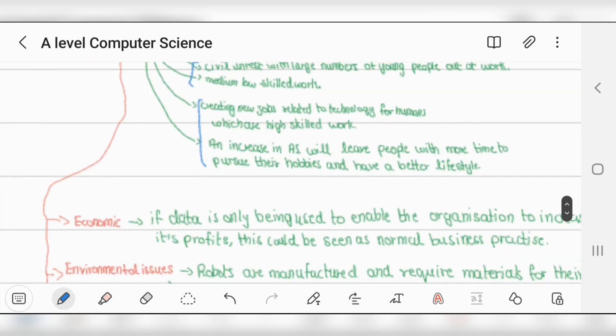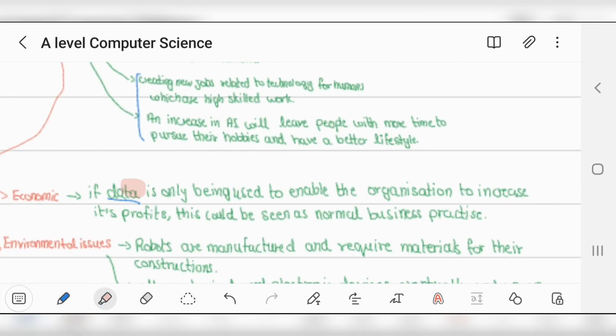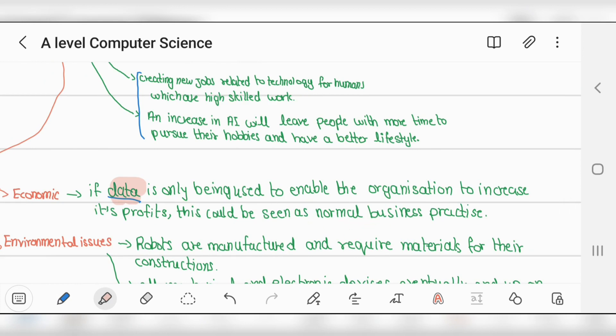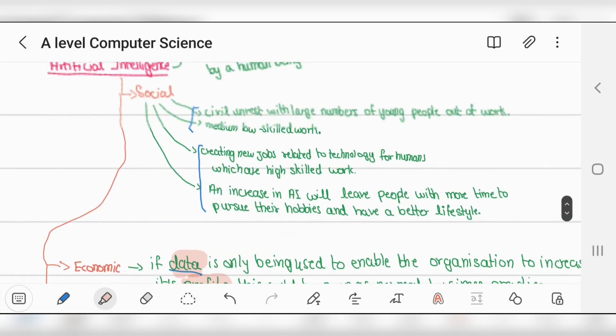Economic impacts: if data is only being used to enable organizations to increase profits, this could be seen as normal business practice. Having AI to manage and use data can easily make huge profits - it could become part of business. AI will change the banking system, making best decisions based on statistics and gathered data.